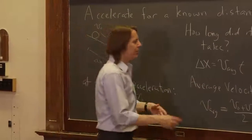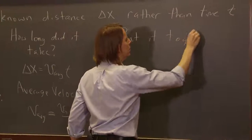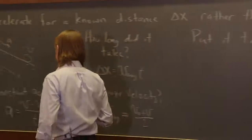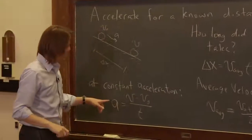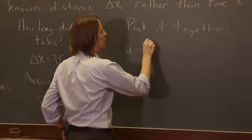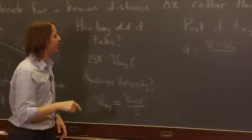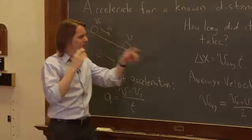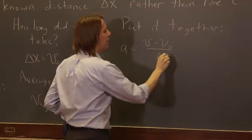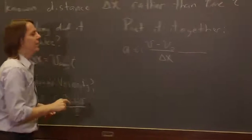So if we put all this together, what are we going to get? So we're going to plug in, a equals v minus v-naught over t. But then for t, we're not going to put t. We're going to put delta x over v average. So I'm going to put delta x over v average. So v average is going to end up in the numerator.